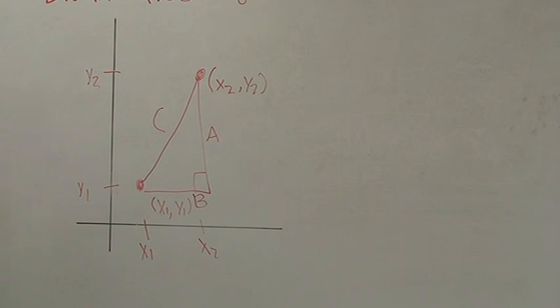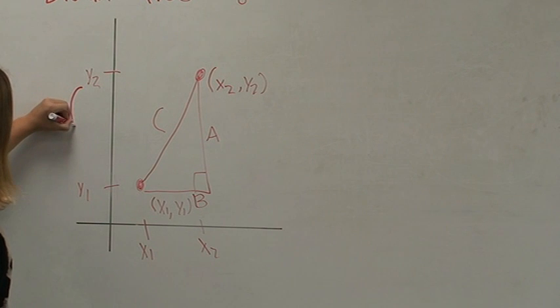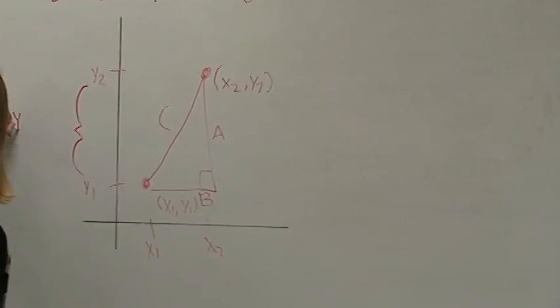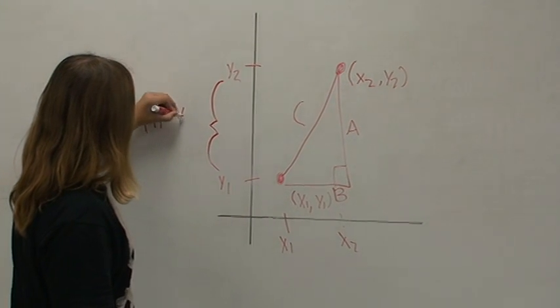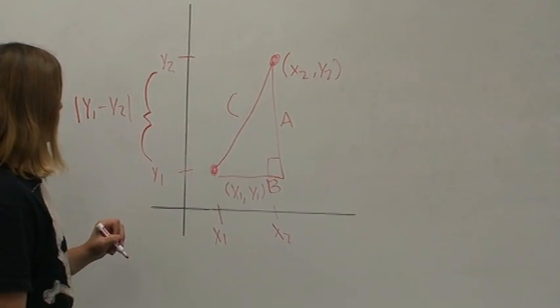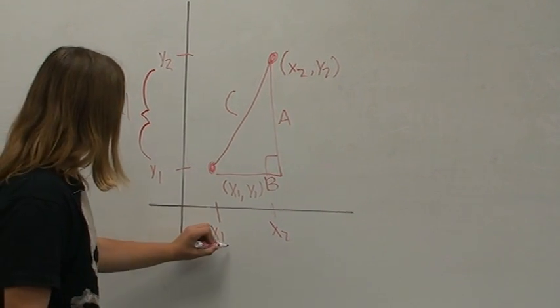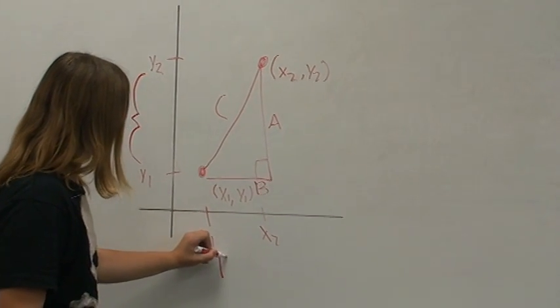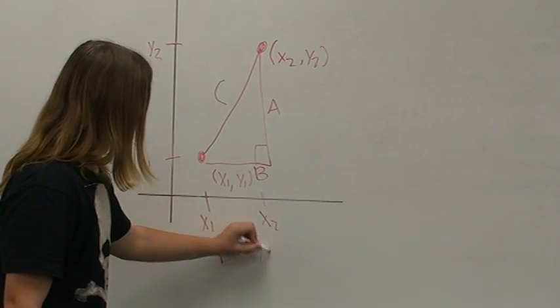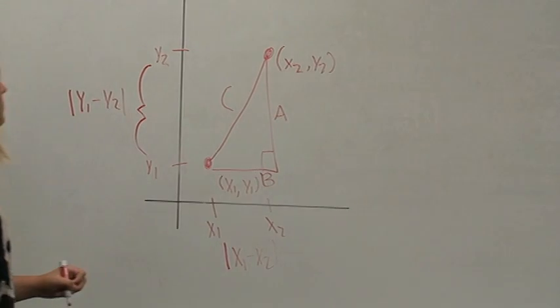Side A corresponds to the y-axis, which is the distance between y2 and y1, denoted as the absolute value of y2 minus y1. The corresponding side B is the distance between the x values, the absolute value of x2 minus x1. We then use the Pythagorean theorem.